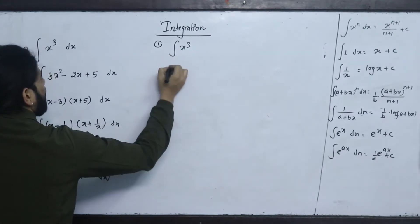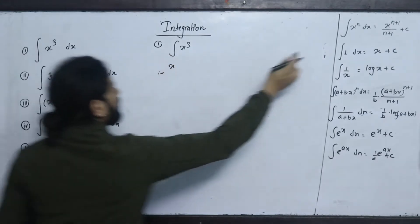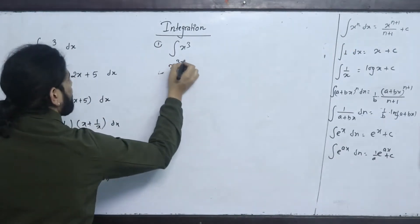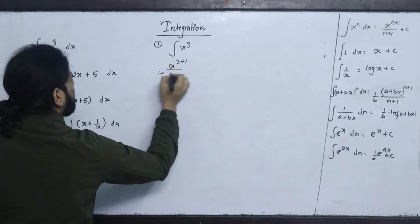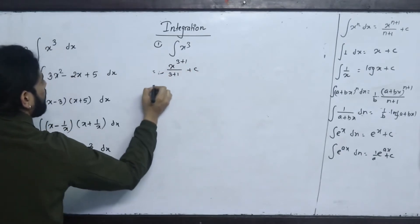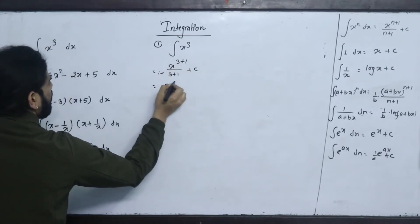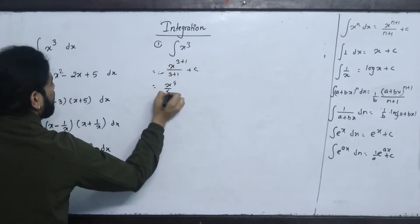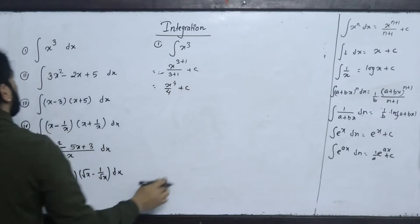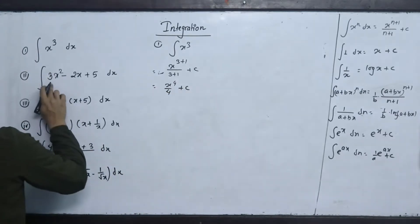First question: ∫x³ dx. Applying the power rule: x^(3+1)/(3+1) + c = x⁴/4 + c.